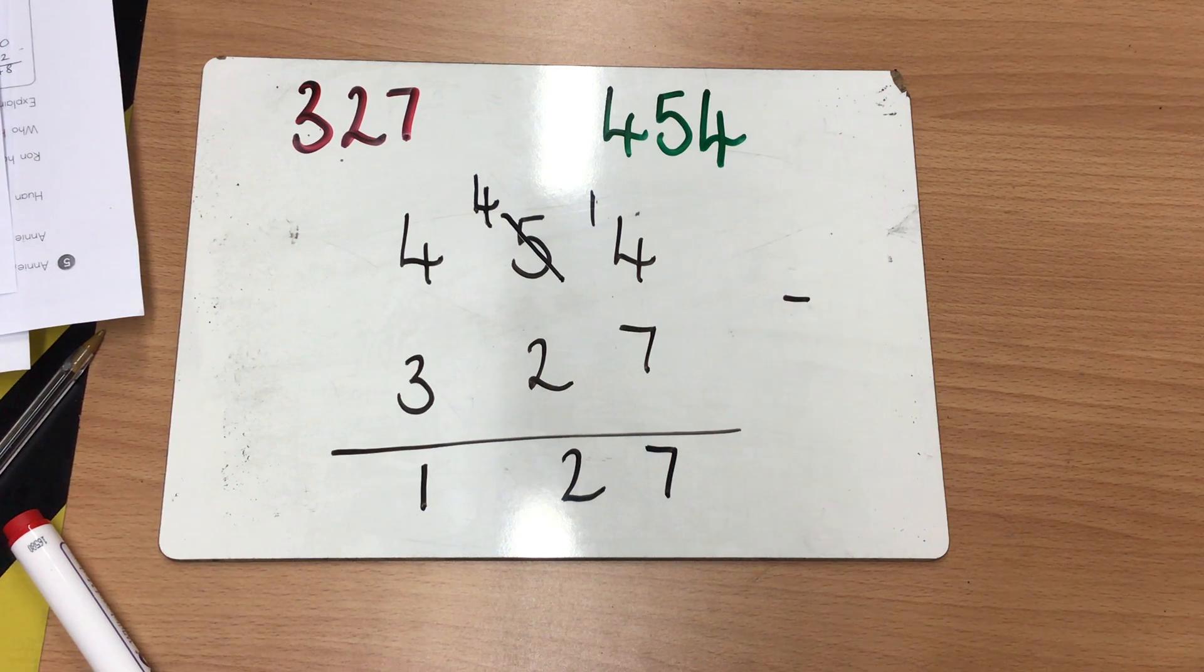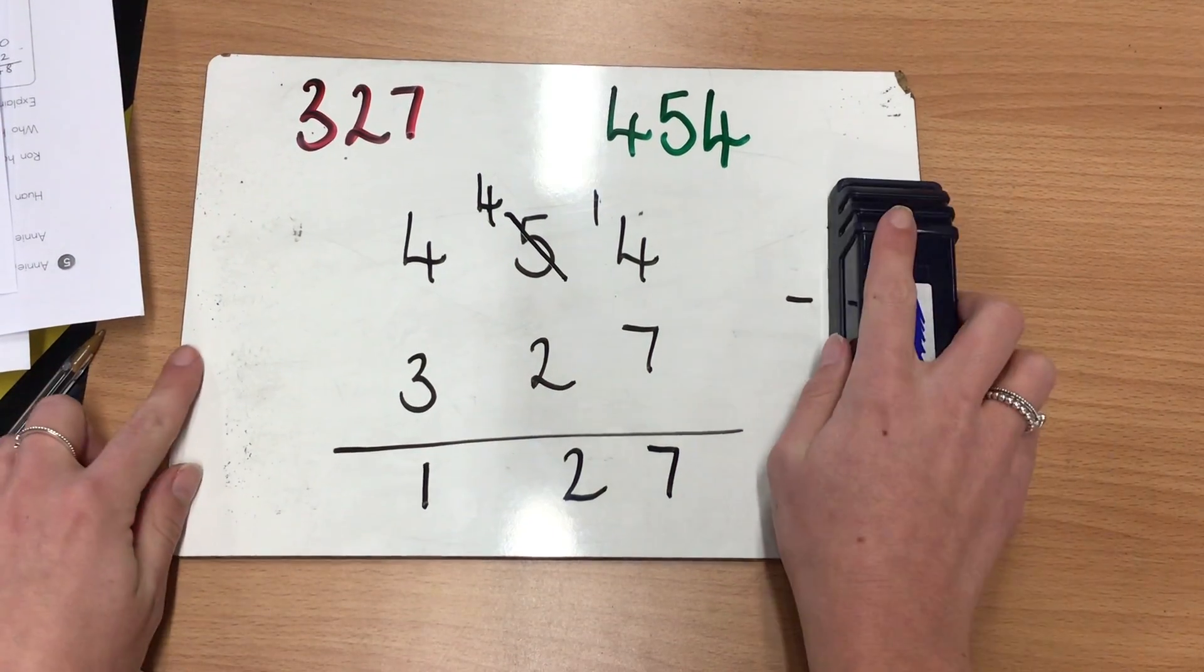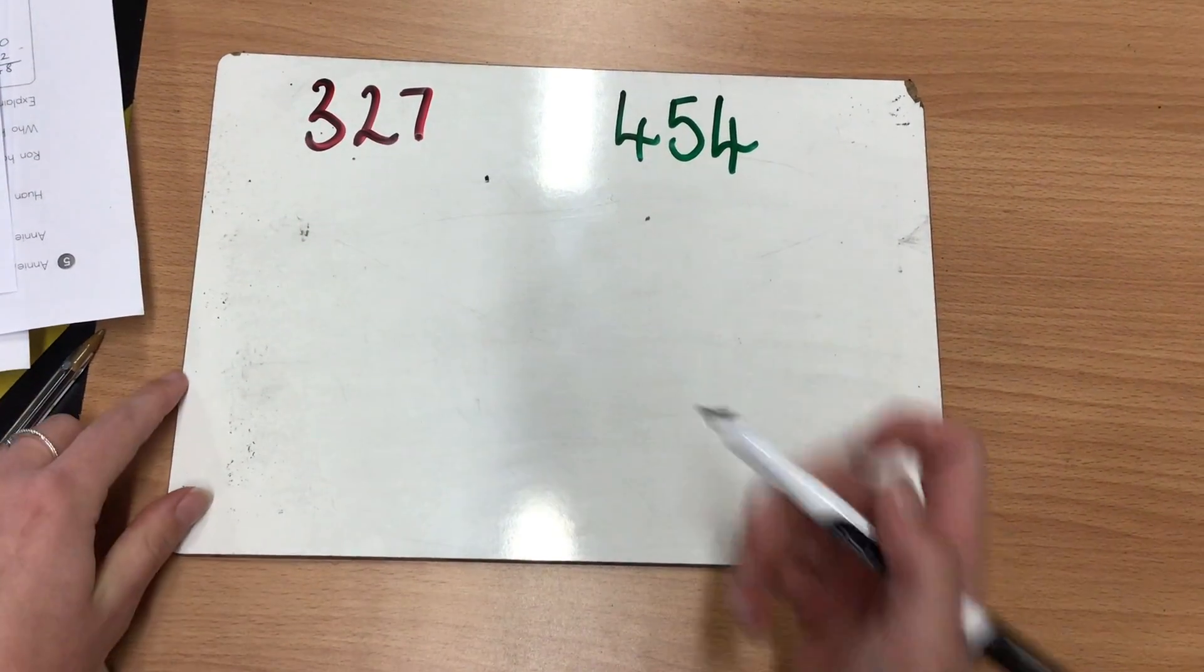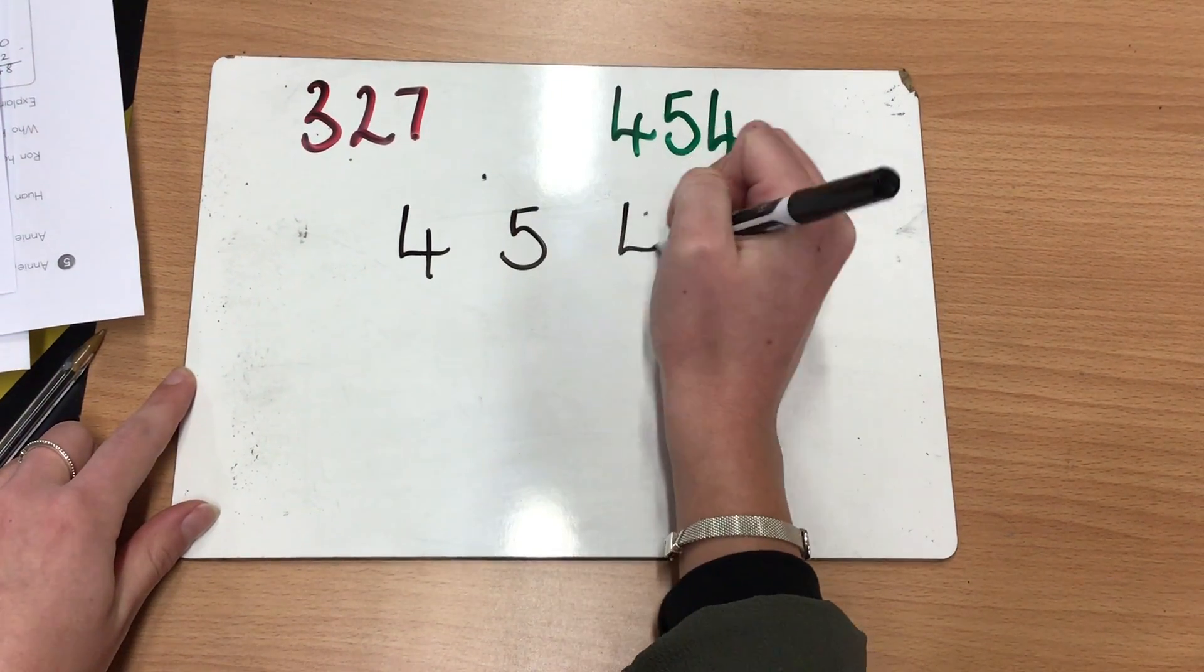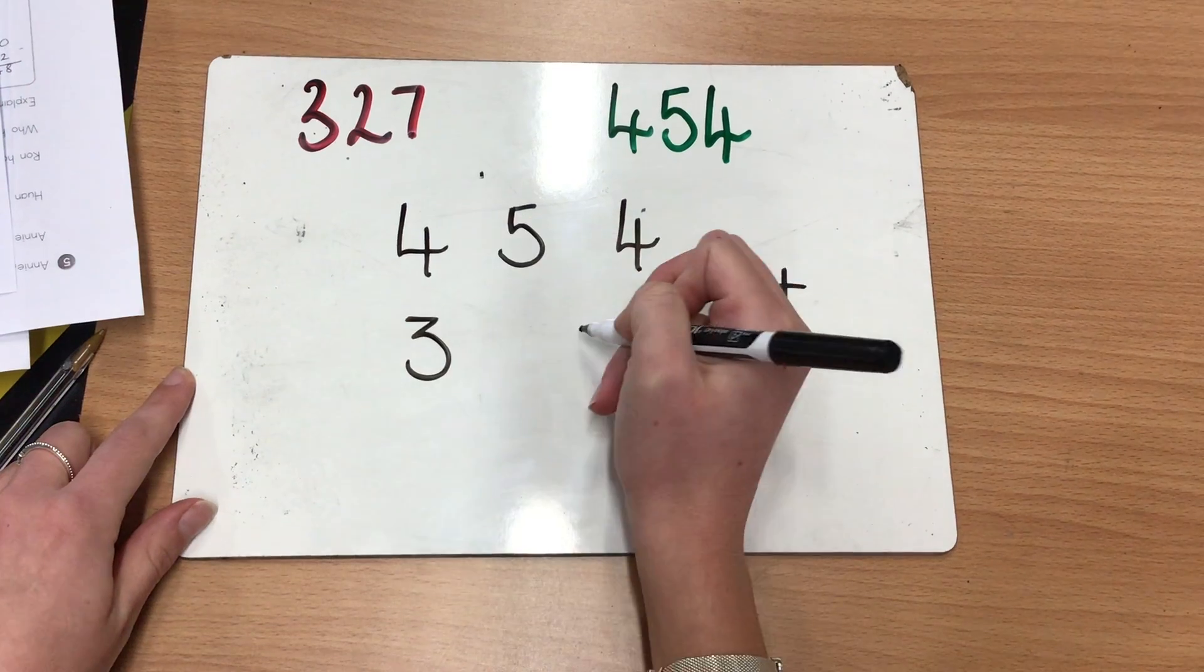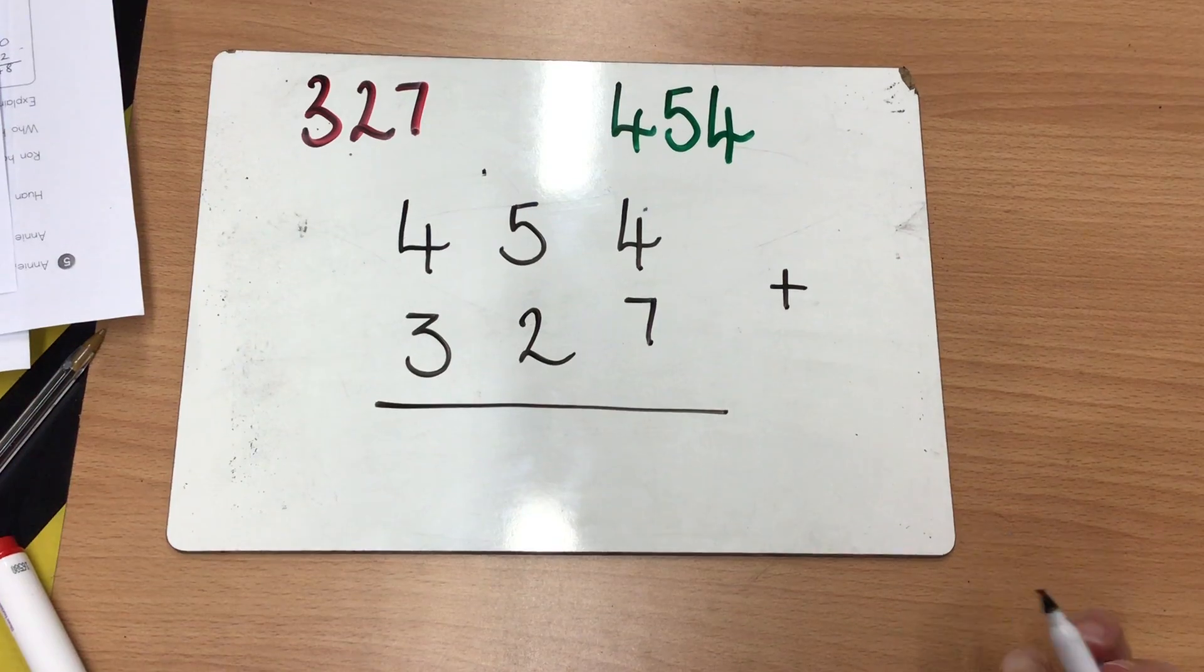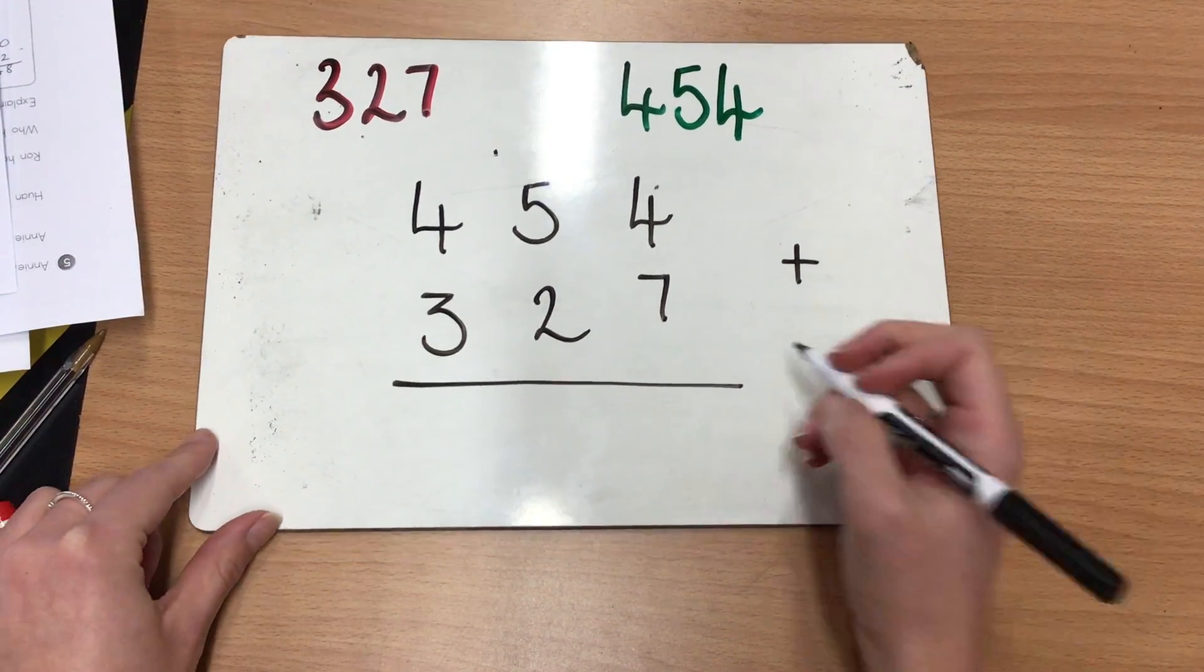So for the second part of this question, we're now looking at how many apples they sold in total. So if we're looking at how many there are in total, we're going to be adding these two numbers together because we know the total means how many there are altogether. So using the same numbers that we had originally, we're now going to use our column addition method. So we're going to do 454, add 327. Again, starting off with the ones column.